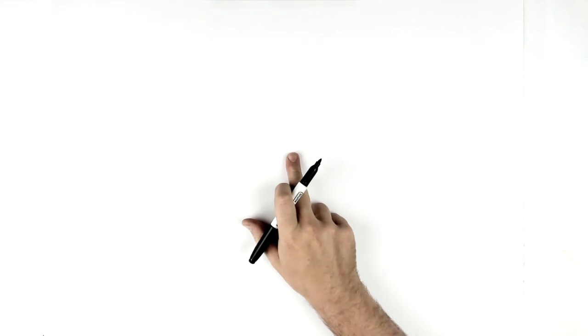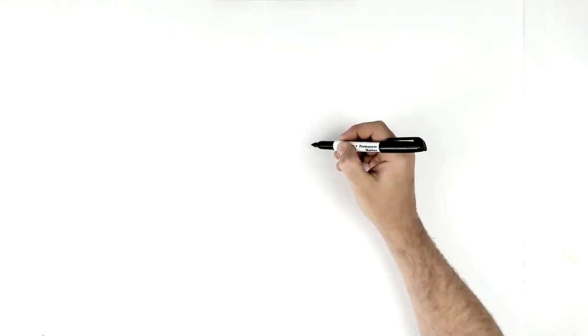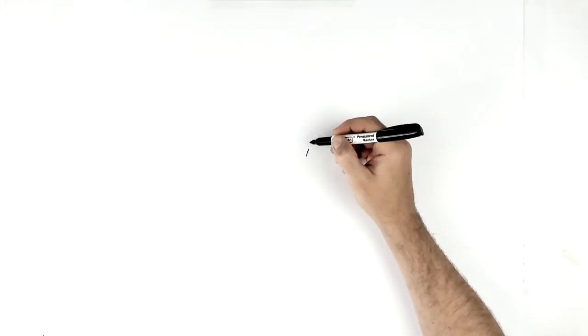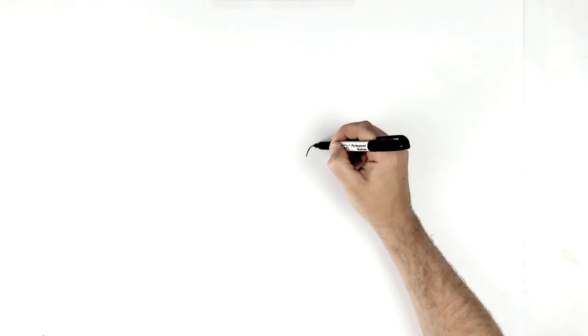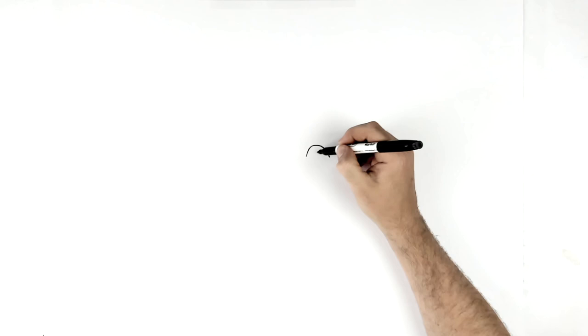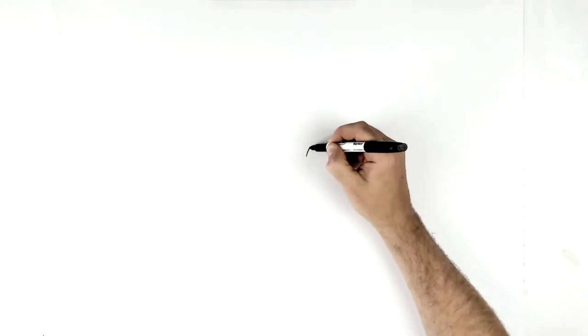We're going to start with his eyes. Find the center point of your page about here, come over to the right-hand side and start with his top eyelash or eyelid line. Of course, wide open round big white eyes. You can thicken this up a little bit.